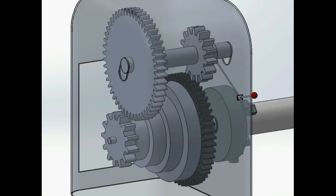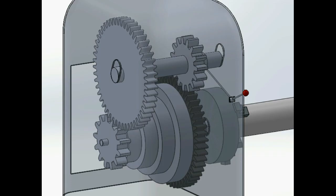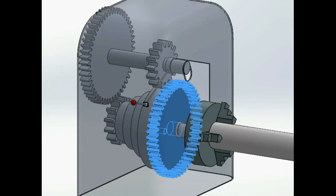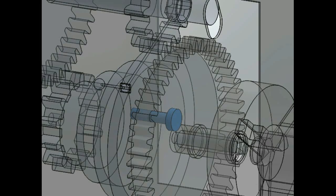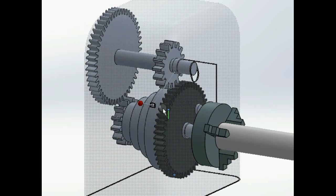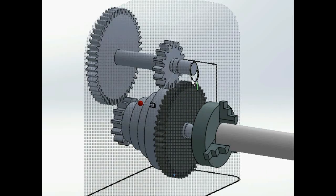For faster speeds the back gears are disengaged. The spindle gear is directly connected to the cone pulley using a pin, so the spindle gear rotates with the same speed as the cone pulley. So does the spindle.